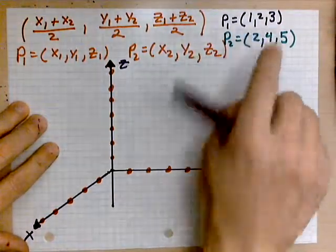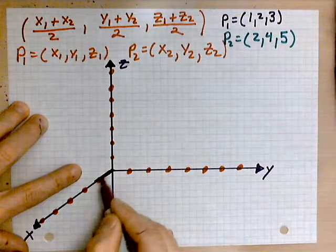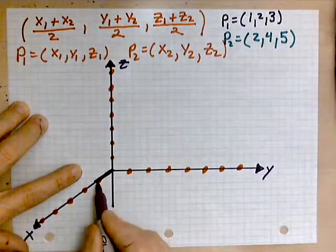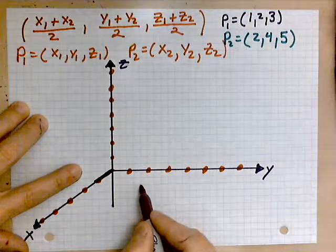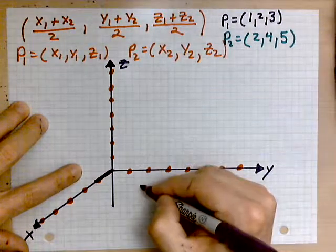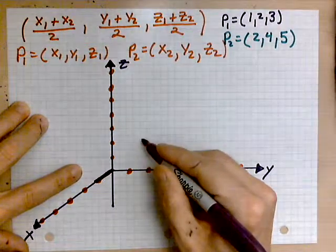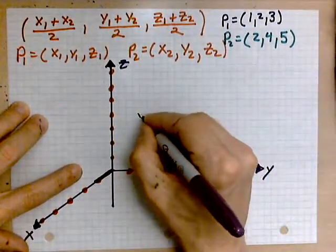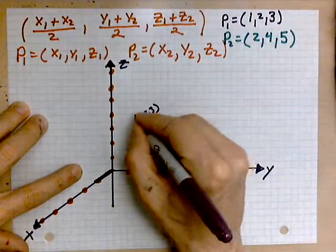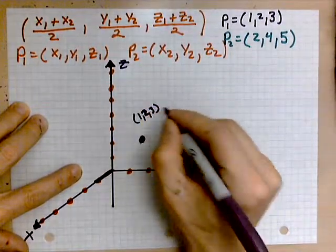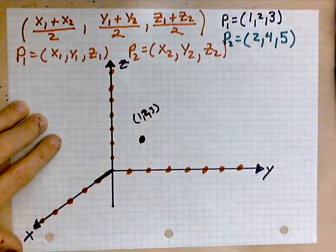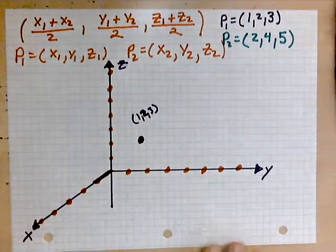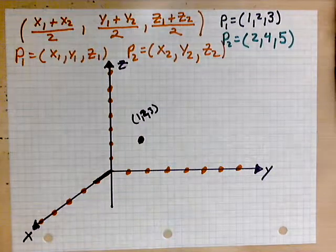And we have the following: (1, 2, 3). So 1 along x, 2 along y, and then 3 along z. So roughly we are here. Let's label this point (1, 2, 3). And this is all happening within what we call the first octant because x, y, and z are positive.